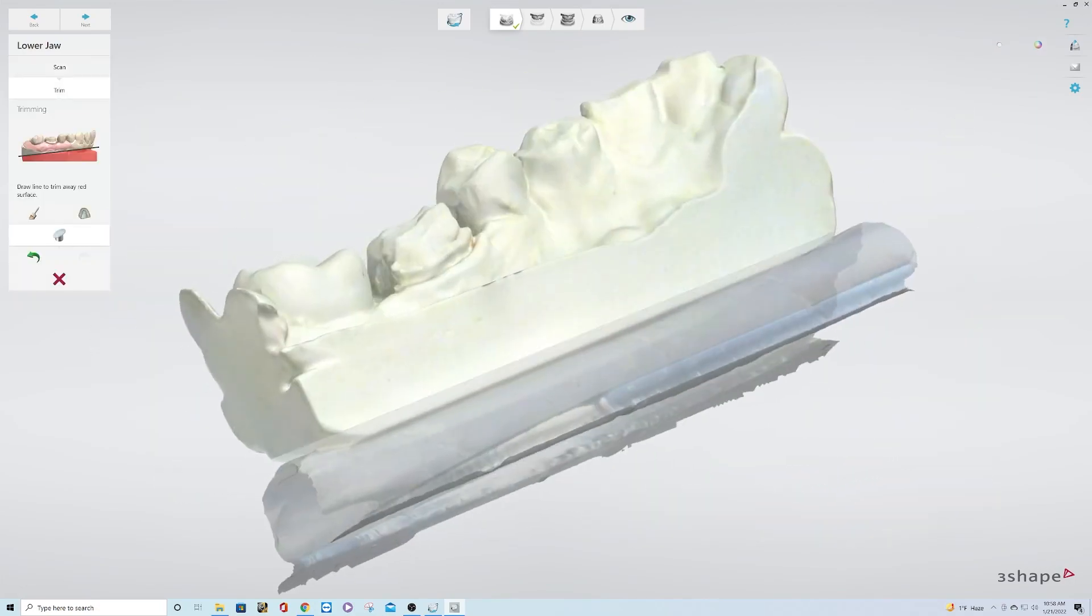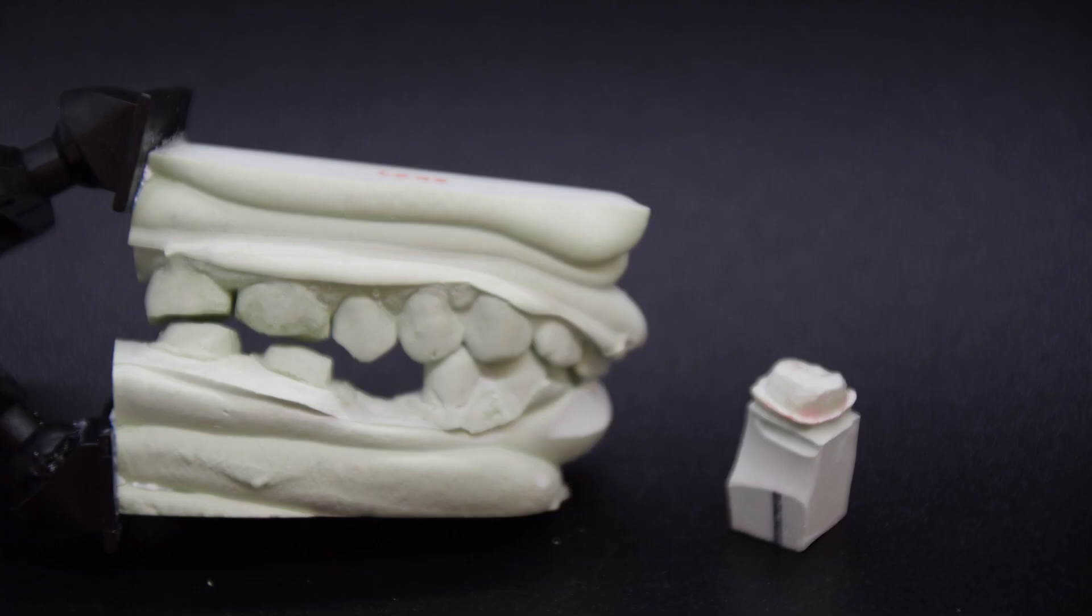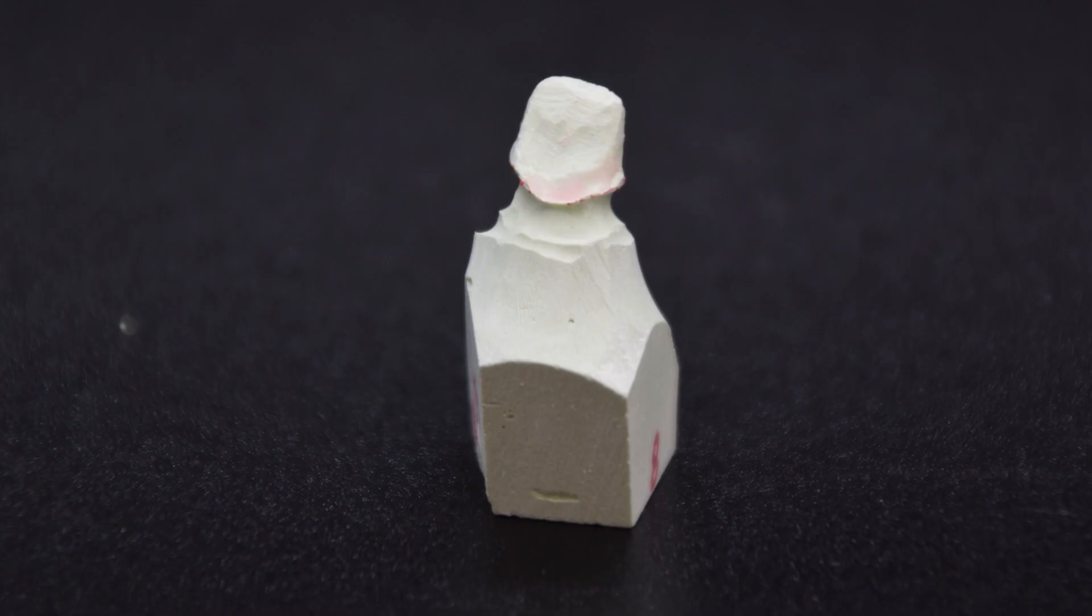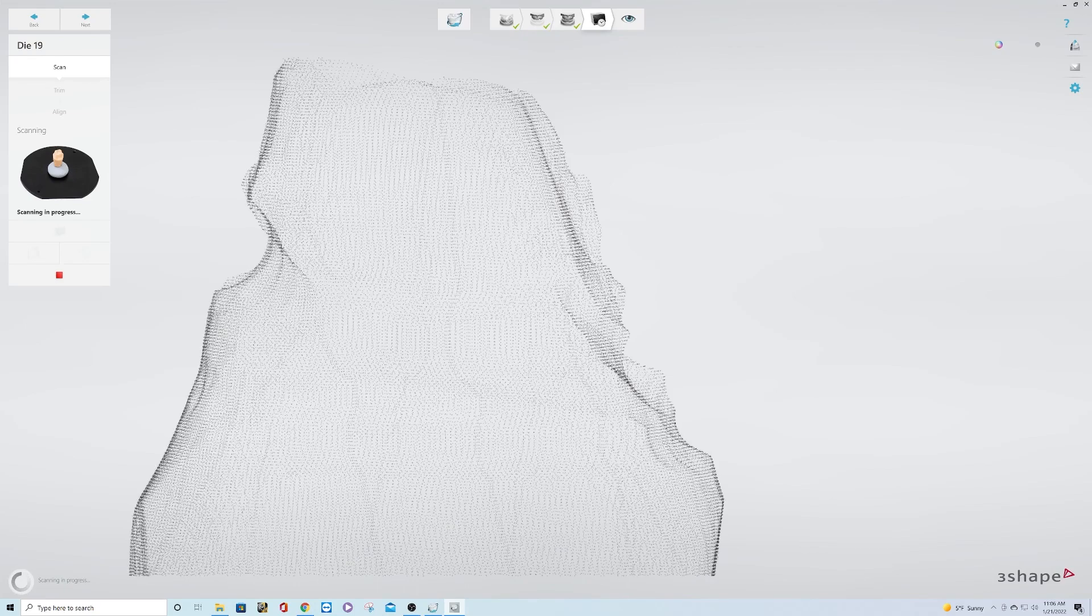There are typically three models made in the crown and bridge department: the subject model, an opposing model, and the dye model. After scanning the models, it is time to begin the crown design.